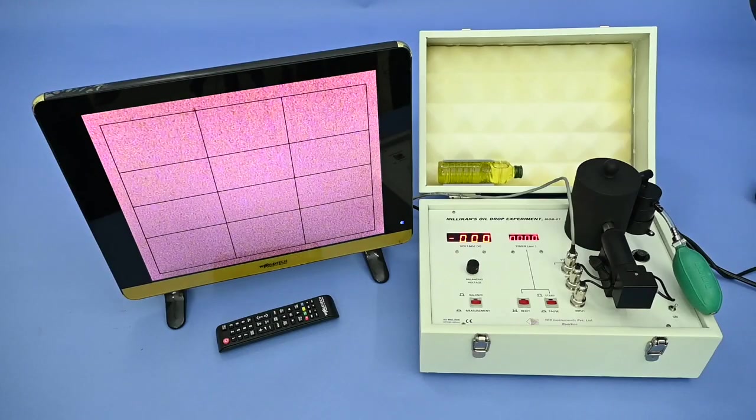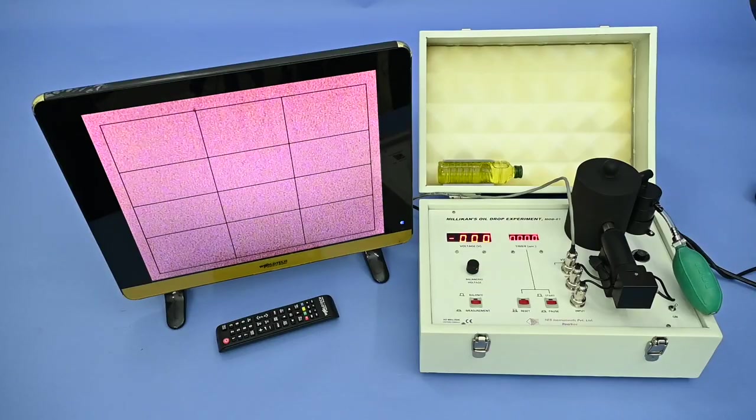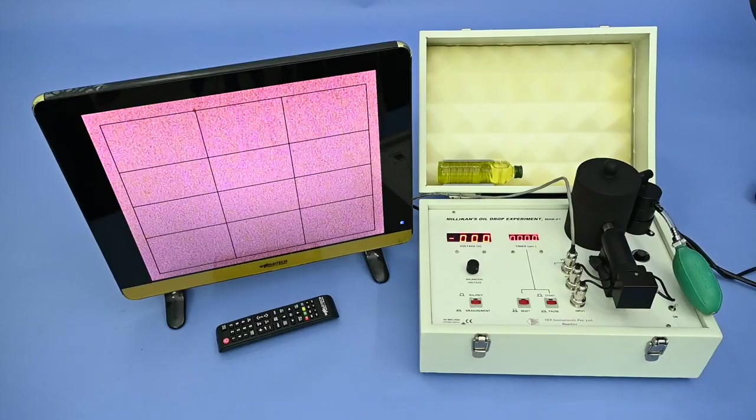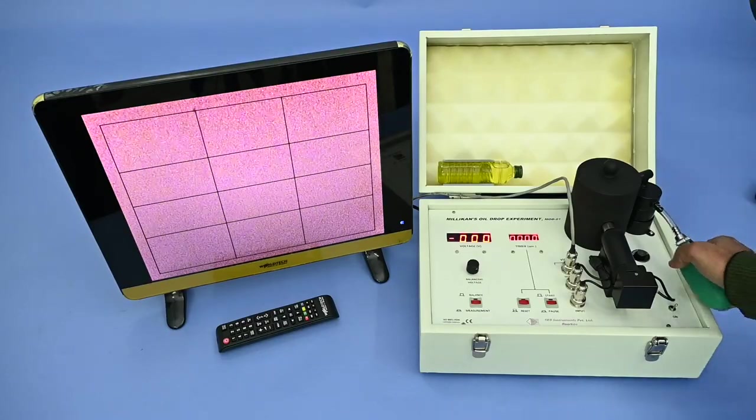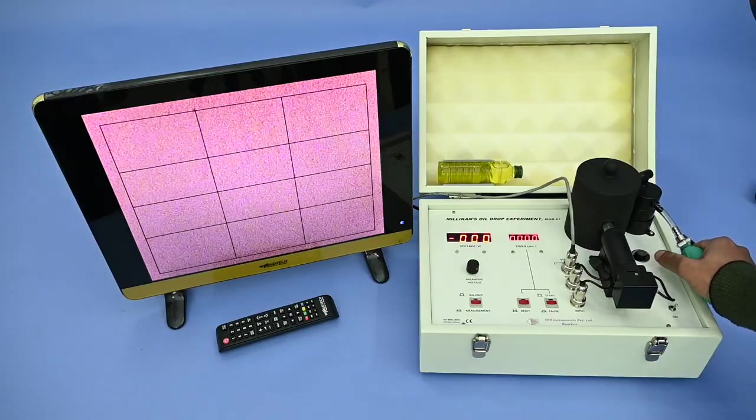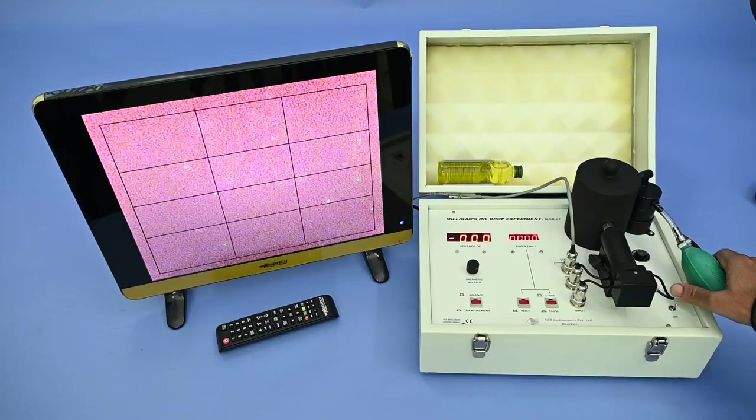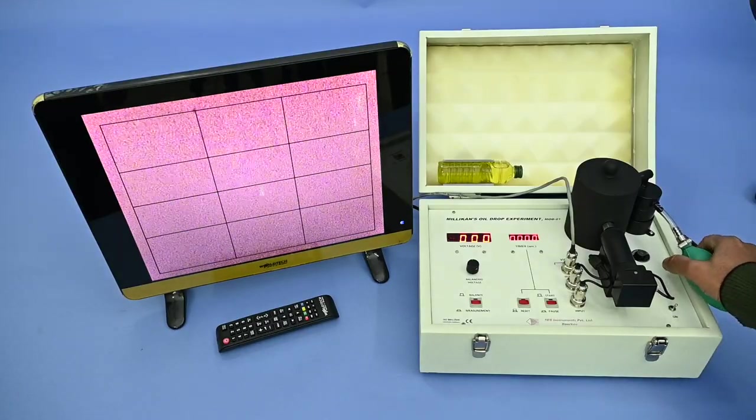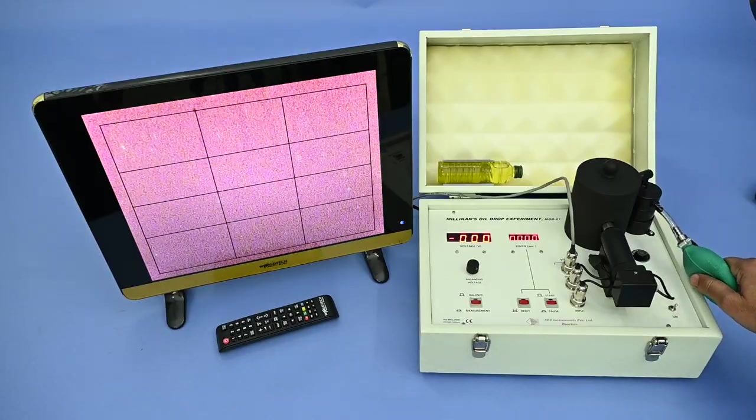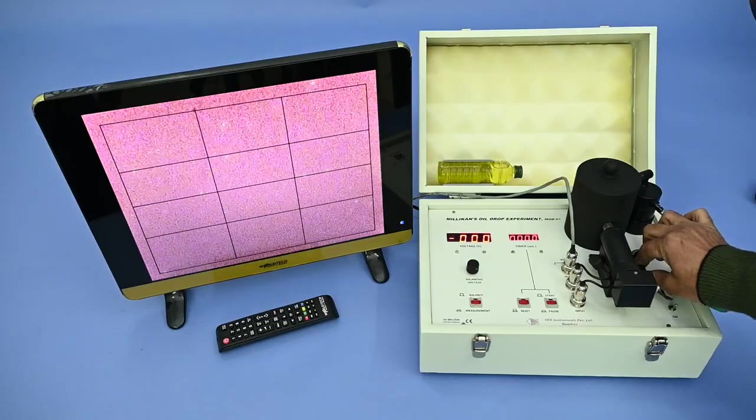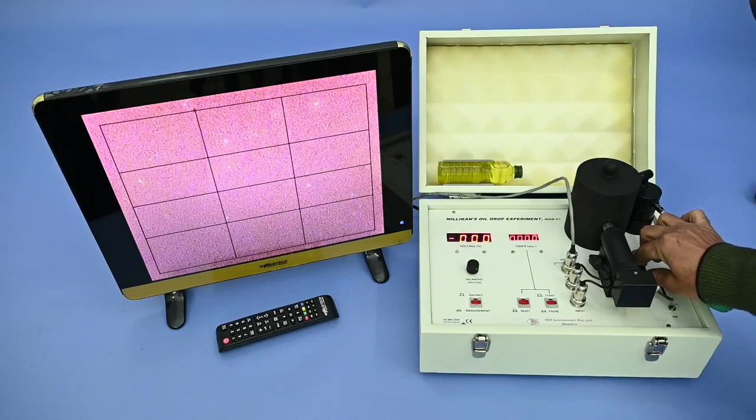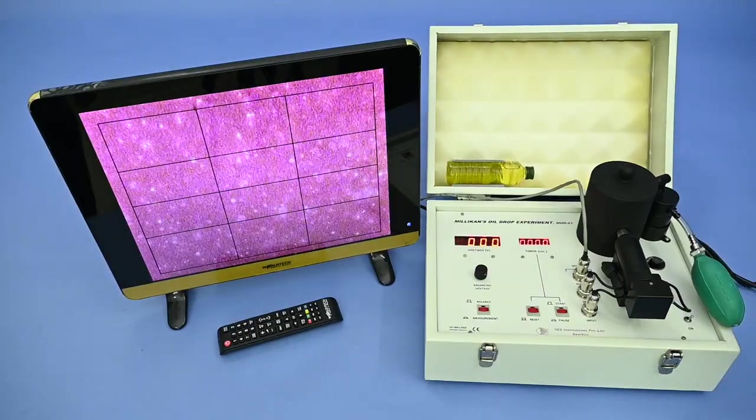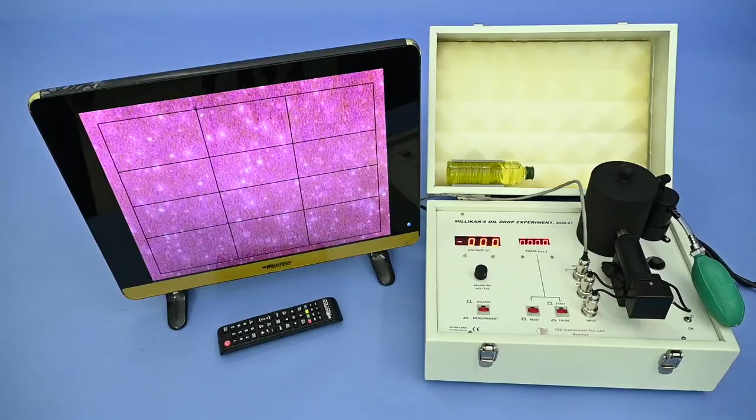There are two methods of performing the experiment, dynamic and balancing method. First, dynamic method. Press the bulb two to four times. You will see the fog. Wait for some time. Let the heavy fog of oil drop settle down.